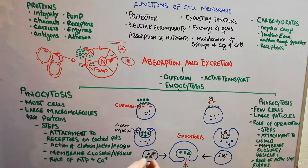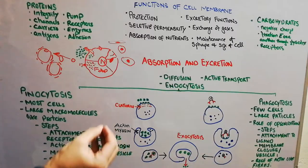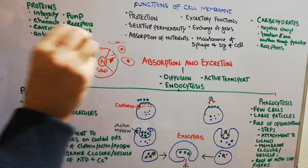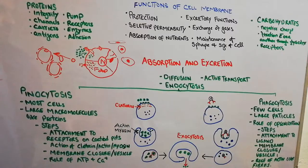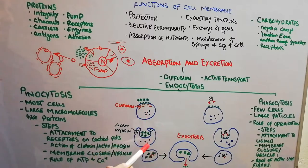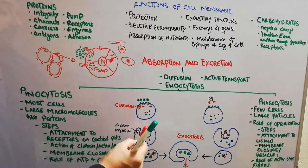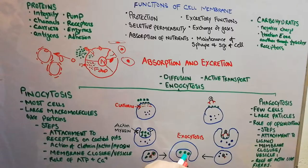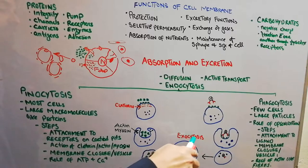Once the vesicle is formed inside the cytoplasm, enzymes present in the cytoplasm — from lysosomes — will come and be released within the vesicles to digest or kill the bacteria or any engulfed substance. The waste material is then excreted through exocytosis.